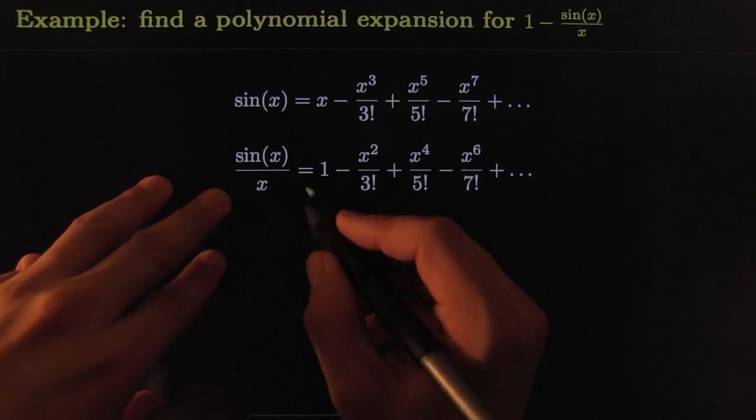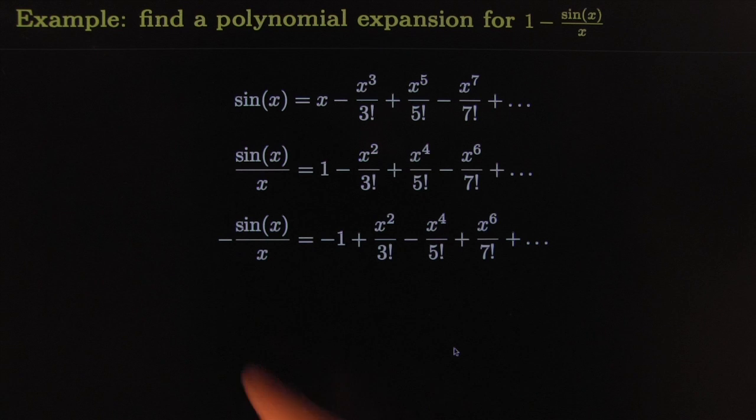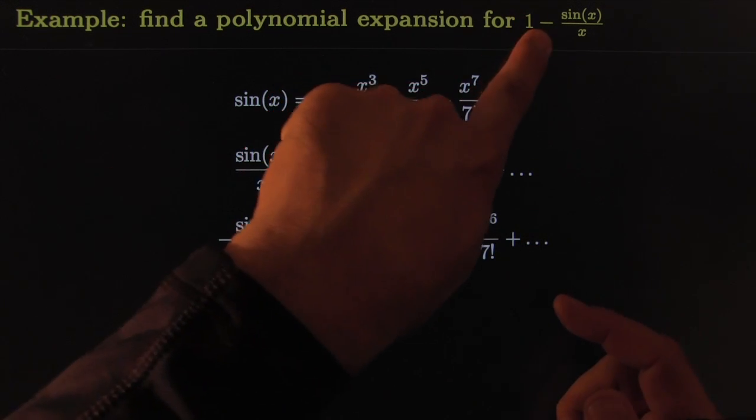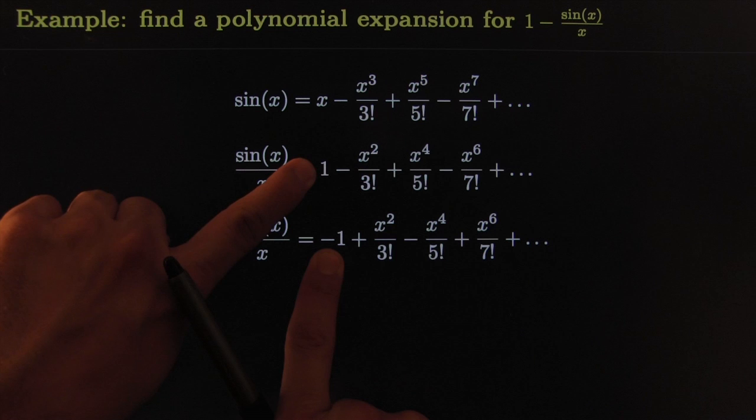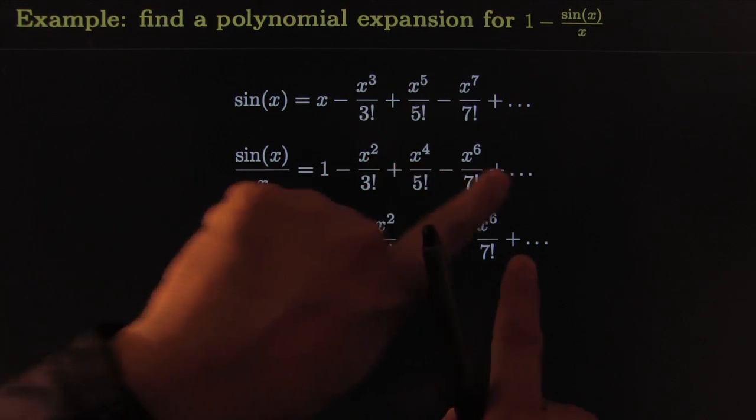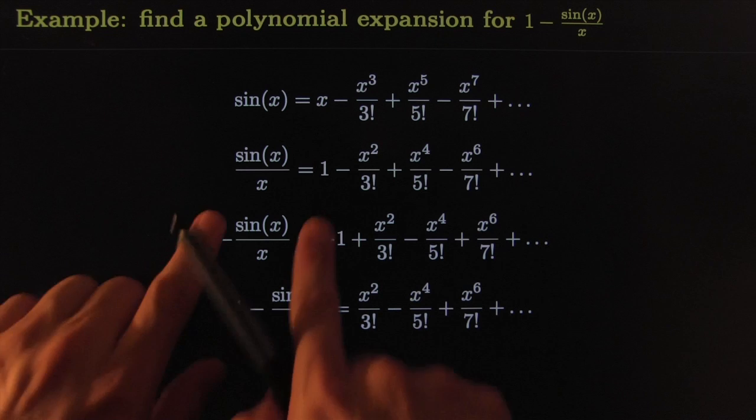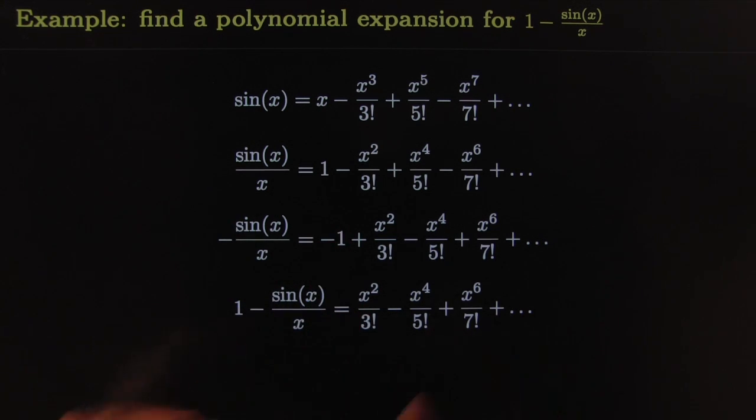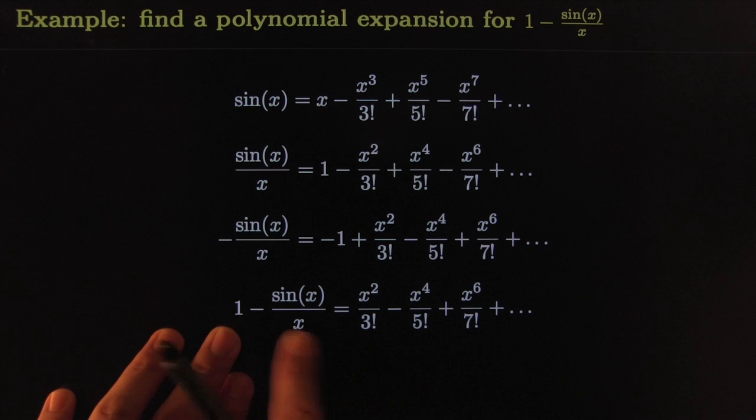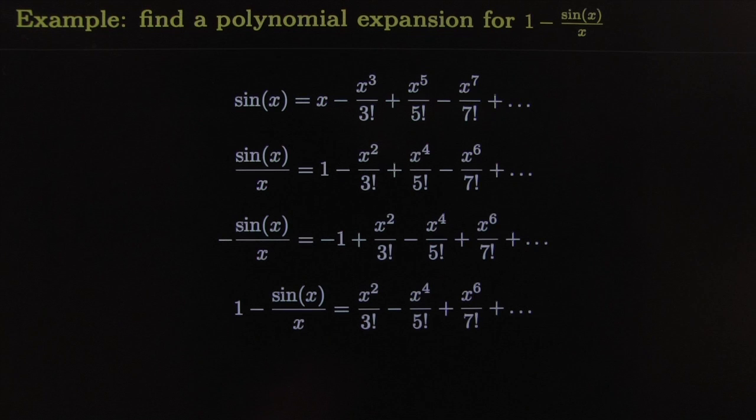Right, and then what else could we do? We could possibly multiply both sides by negative, because I'm trying to match that and I've got a negative. So I slap a negative on both sides, changing all the signs here. Wait, there's more: I better add a 1 here. So I add a 1 to both sides, and that would cancel this 1 out. And so I've got myself an expression for this piece right here: 1 - sin(x)/x. That's beautiful, see?